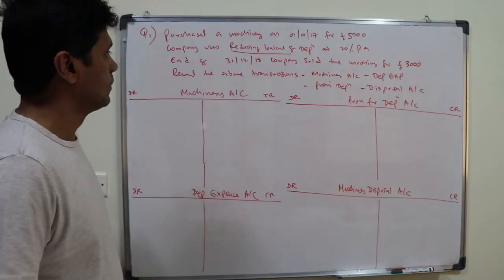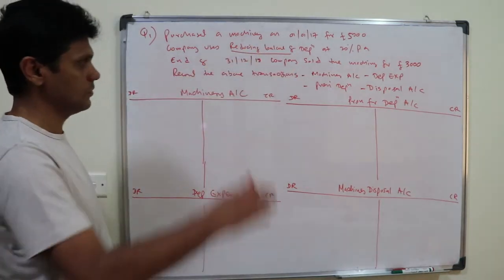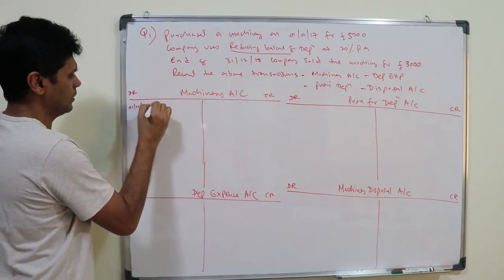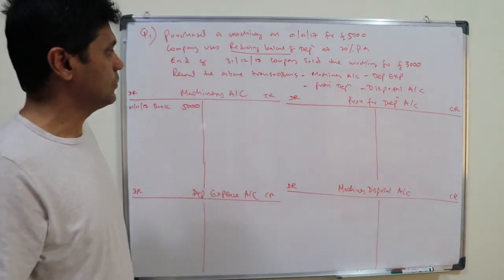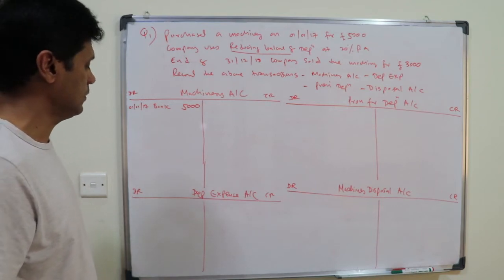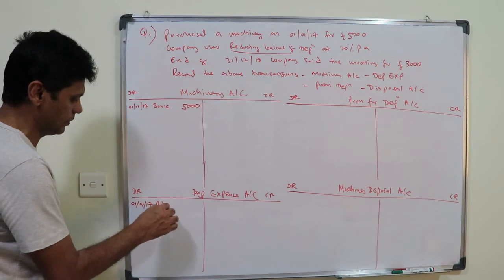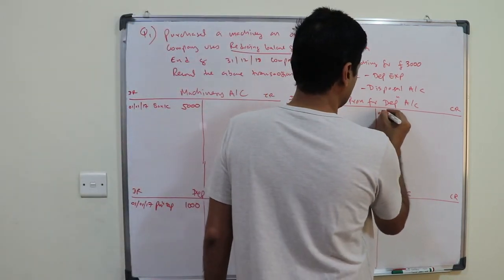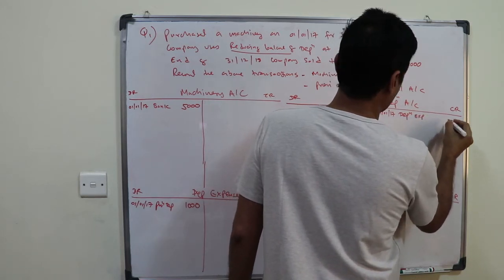First, record the purchase: credit the bank account and debit the machinery account five thousand on 1st January 2017. Then record the first year depreciation of one thousand: debit the depreciation expense account and credit the provision for depreciation account one thousand on 1st January 2017.